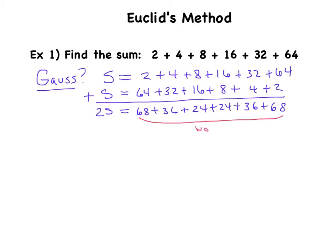These are not the same, so that means we can't really use Gauss's method for this. We're going to have to come up with something else—or rather, we're going to have to adopt this strategy that Euclid used.